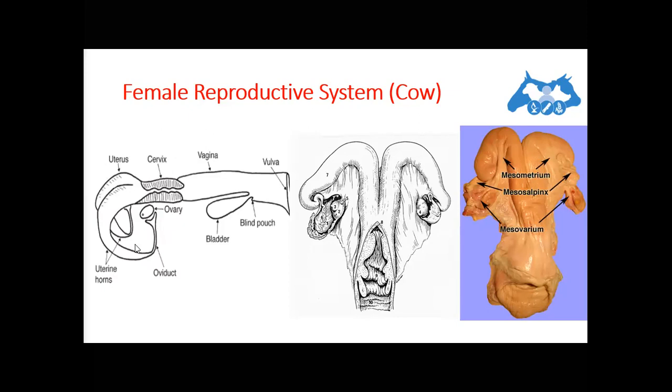End of the Mullerian ducts, the anterior end of the Mullerian ducts, it gives rise to the oviduct, the fallopian tubes or uterine tubes. So the oviducts are the functional links between the ovary, starting from this point, to the uterus. And the uterus, which is the site of gestation, I'm not going into the details of the structure of each part of the reproductive tract, but I will be introducing generally each part.